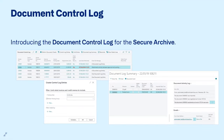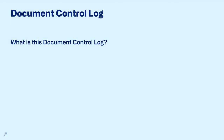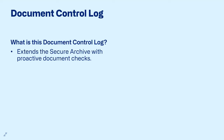Moving on to the Document Control Log. It extends the Secure Archive with some extra checks that make sure we see issues in good time. It will highlight documents that have a failed file hash — the checksum — and also if an attachment has been deleted, it will notify you. Those error-prone documents can be reconciled — you can put a checkmark saying 'these are okay, I checked it, it's okay that the file was deleted or was replaced' — and then remove them from the list of error-prone documents.